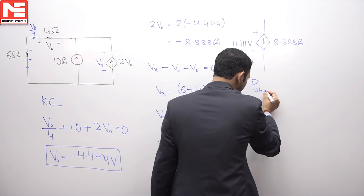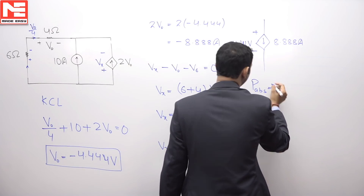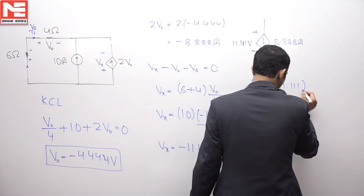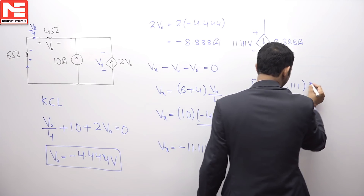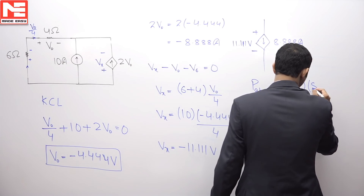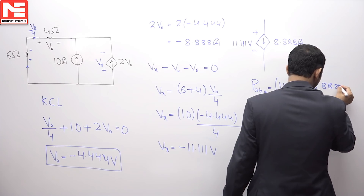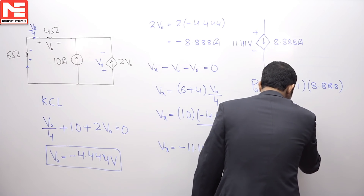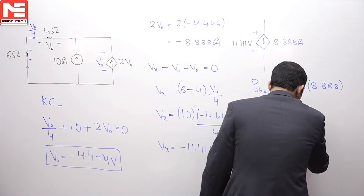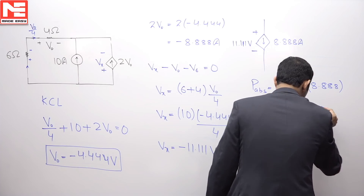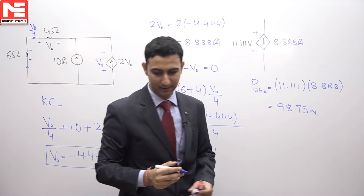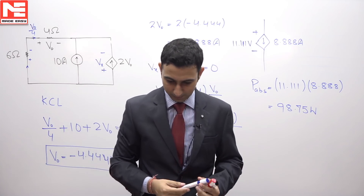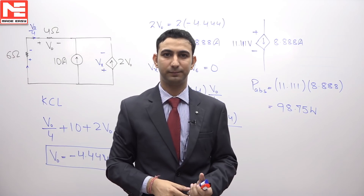Power absorbed will be the product of voltage, that is 11.111, multiplied by the current 8.888. Hence, it is coming as 98.75 watts. Hence, this is the answer and option C is the correct option.